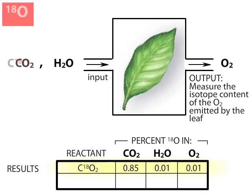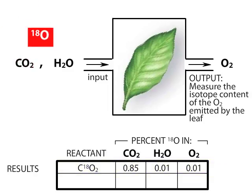Now let's repeat the experiment by labeling the H₂O reactant. Again, our data will consist of the O18-O16 isotope ratio measured in the evolved oxygen as compared to the starting ratio in the H₂O reactant.